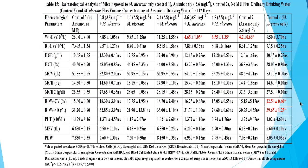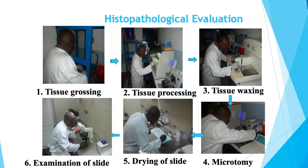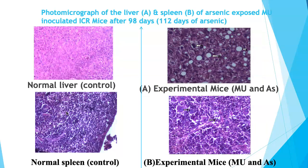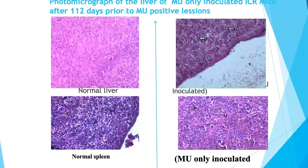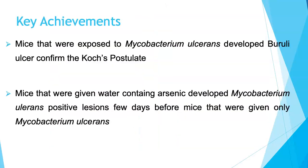Results showed mice given high doses of arsenic (3.6 to 4.8 mg/L), including the arsenic control, had significant reductions in WBC numbers; the same was observed for RBC and hemoglobin. Histopathological analysis — including tissue grossing, processing, waxing, microtomy, and slide examination — showed dose-dependent damage in liver cells, but not in spleen cells. In conclusion, mice given M. ulcerans developed Buruli ulcer, and those given arsenic-containing water in addition developed ulcers faster, supporting Koch's postulates.